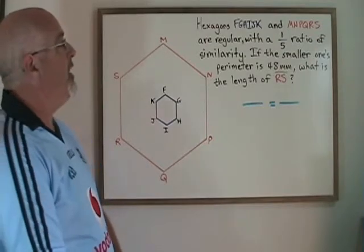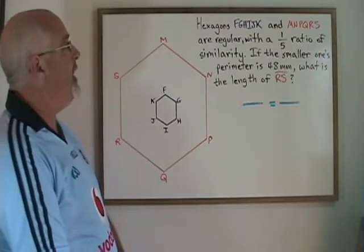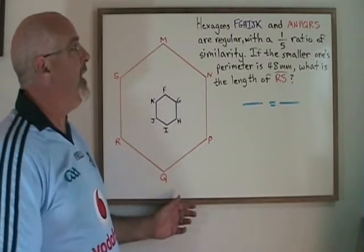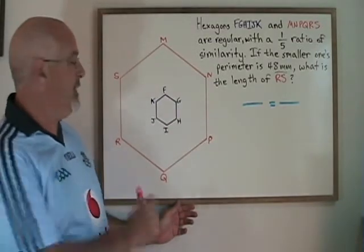Here's another example of two similar regular polygons. In this case, we have hexagons FGHIJK, the purple one, and MNPQRS, the orange one.